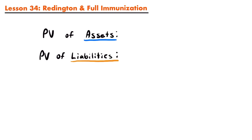In order to discuss immunization, we need to consider the present value of the assets and the present value of the liabilities for a business. In both cases, we're going to be representing these present values as a function of the interest rate. If you were going to write out the present value for a set of assets or liabilities, within that equation you would have several present value factors, but those present value factors are defined by the interest rate i. So we can represent the present value as a function of i.